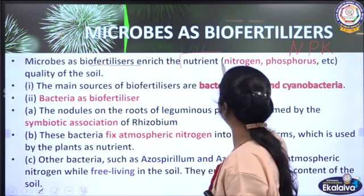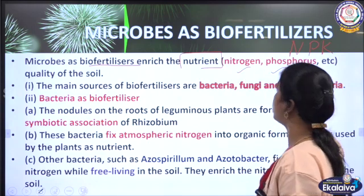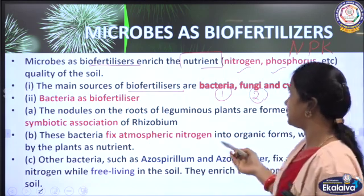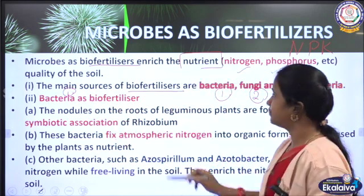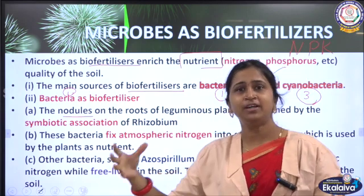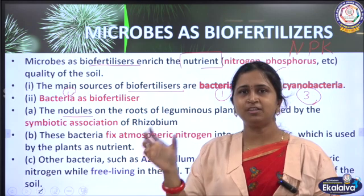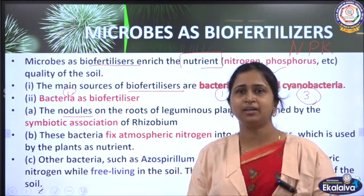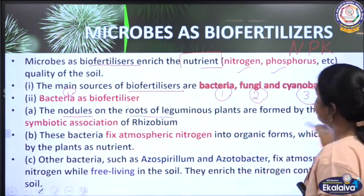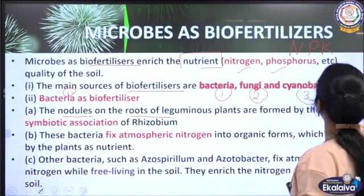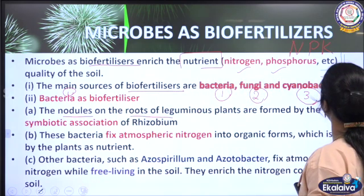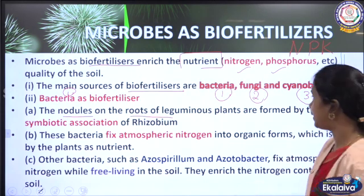Microbes as bio-fertilizers enrich soil nutrients, specifically nitrogen and phosphorus. The three main sources of bio-fertilizers are bacteria, fungi, and cyanobacteria. Looking at bacteria first: nitrogen-fixing bacteria are found in nodules on the roots of leguminous plants. The bacterium Rhizobium fixes atmospheric nitrogen into organic forms that the plant uses as a nutrient. You can see this as nodule-like structures on the plant roots.